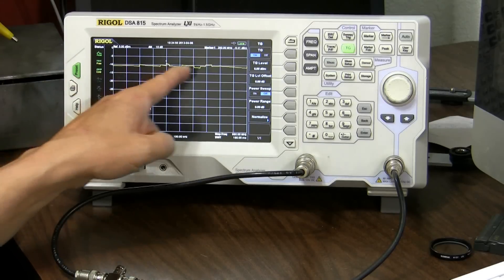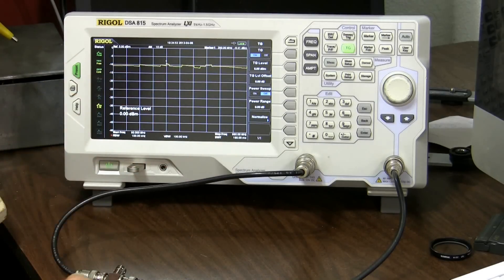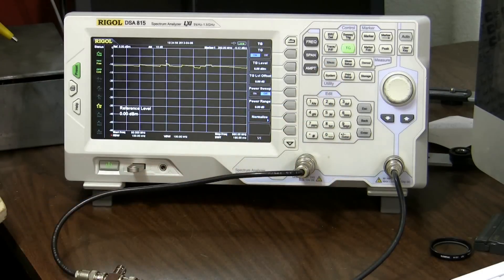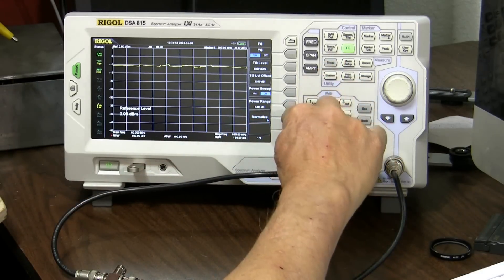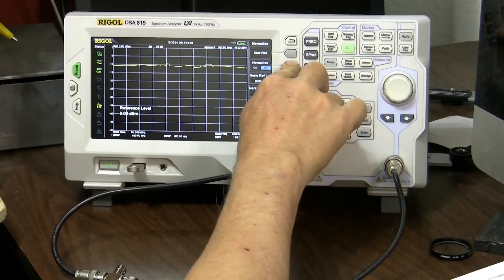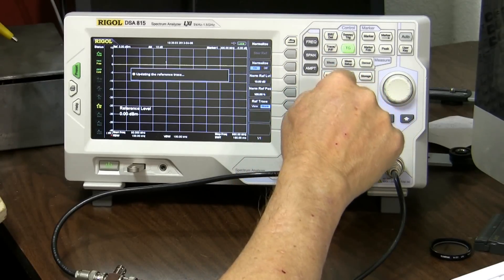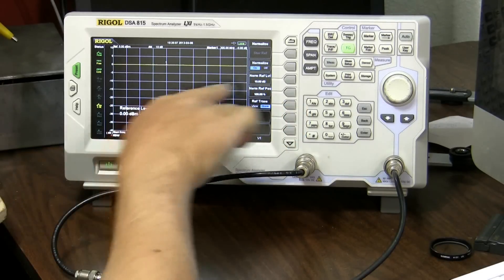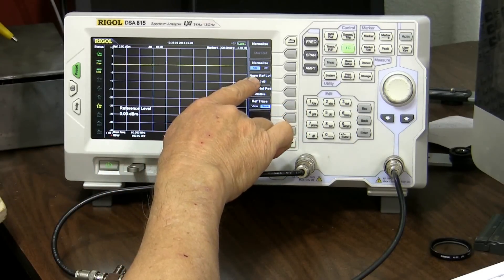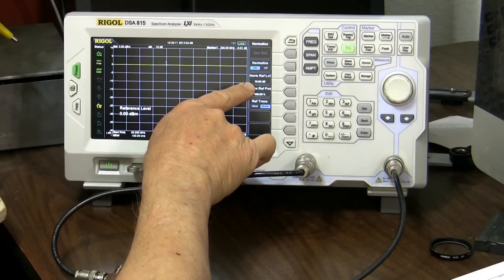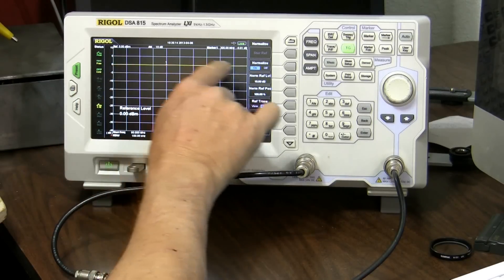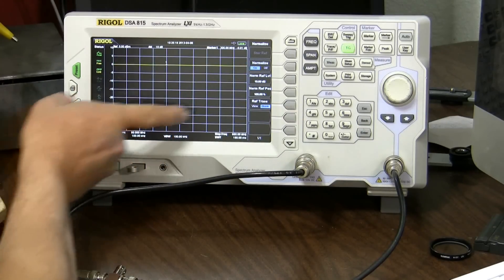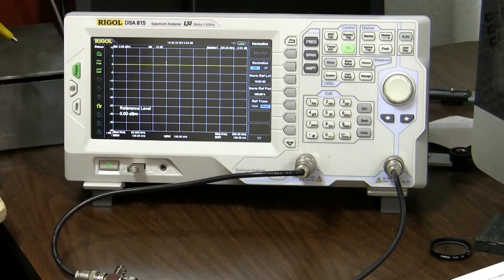And as you see we have the usual variation due to this particular tracking generator but what we do for that is quite simple. We go to normalize and hit normalize, holding it down briefly, and it puts it right at zero here. And I've already set that I want the normalized reference level to be at 10 dB so there's 10 and here's our zero line across here from 60 to 660 megahertz.